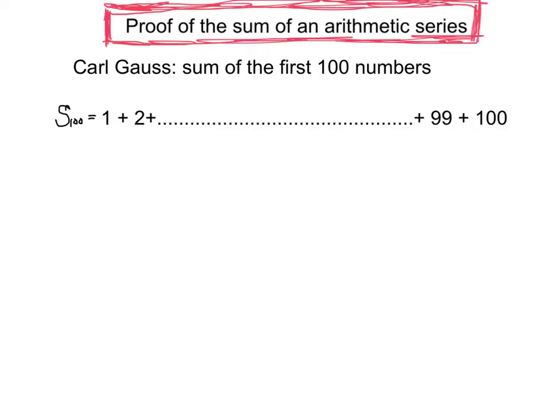He first of all laid out the sum of the first 100 numbers: the first term, the second term, the penultimate term, the nth term. He then said, I'm going to reverse that list. I'm going to start with the nth term, then the penultimate term, then all the ones intervening in the middle, and then the second term, and the first term.